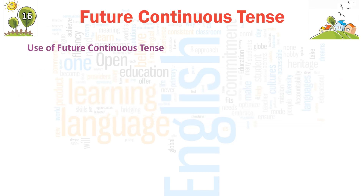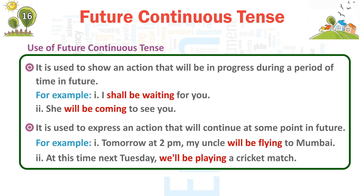Use of Future Continuous Tense. First, it is used to show an action that will be in progress during a period of time in the future. For example: first, 'I shall be waiting for you.' Second, 'She will be coming to see you.'